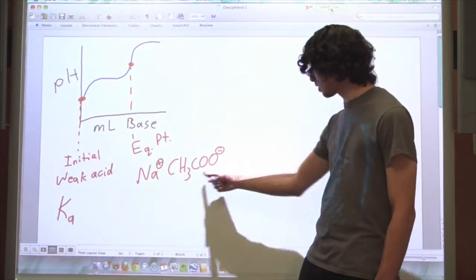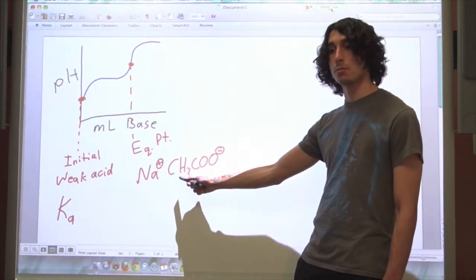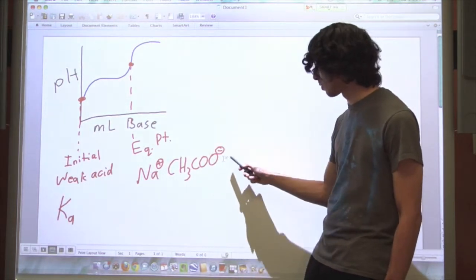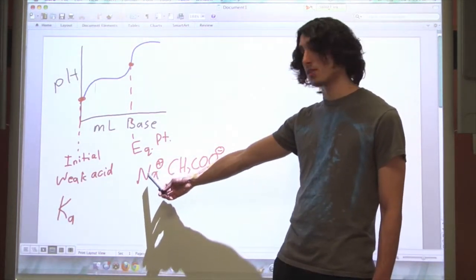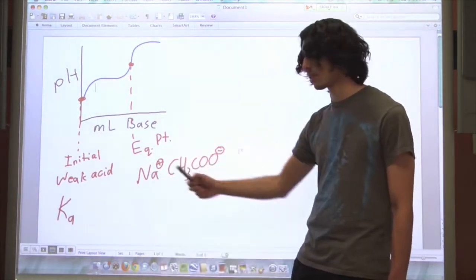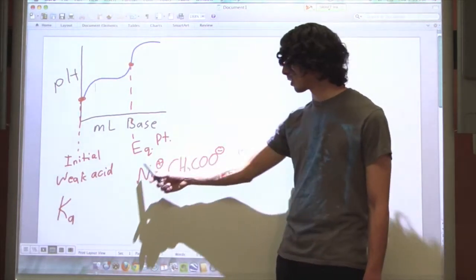So here's the acetate ion. This comes from acetic acid, where it lost its proton. This is where the proton would go. And here's the sodium, which lost its hydroxide. That proton and the hydroxide react to form water, and we get this salt left over.